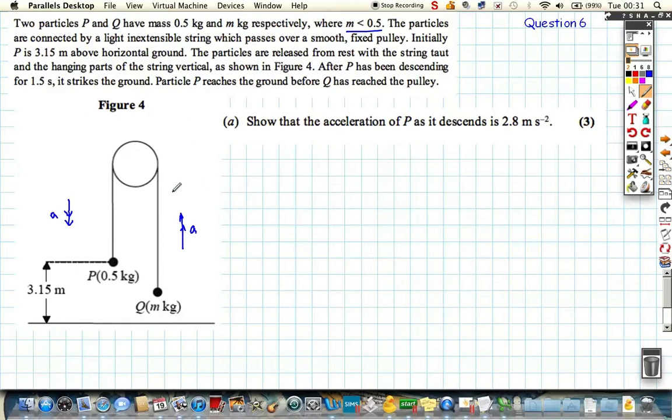It takes 1.5 seconds for the ground. We need to show that the acceleration is 2.8. We're going to use our SUVAT equations. If we use SUVAT with positive in downward sense, the particle P is going to travel 3.15 metres before it hits the ground, starts off at rest, and we want to show it's 2.8. We're told it takes 1.5 seconds. So we've got S, U, A and T. That tells me instantly that we want to use the equation S equals UT plus half AT squared.